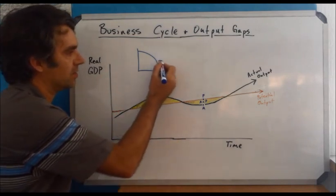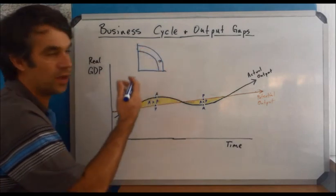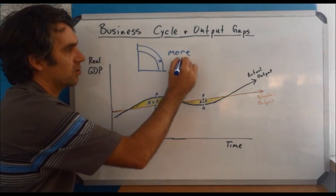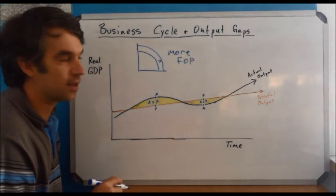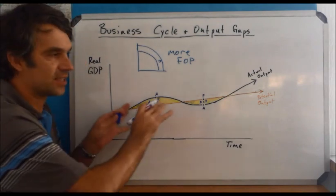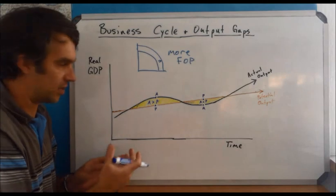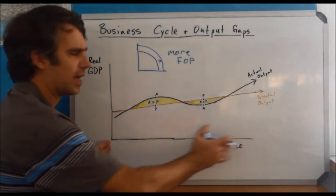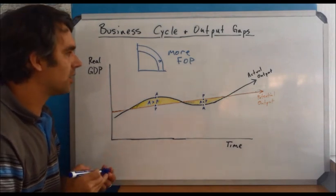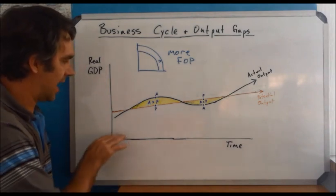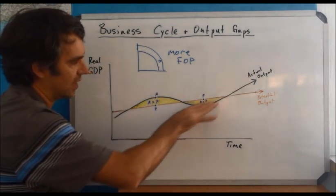The PPC is our idea of that's our potential and we can't go beyond it until we get more factors of production. So to push the PPC out required that we get more factors of production, like more land, labor, capital, or entrepreneurship, something like that. This is a similar idea because it's over time and we are talking about a long amount of time. This chunk of time, it's not a week. It's got to be years, at least months.